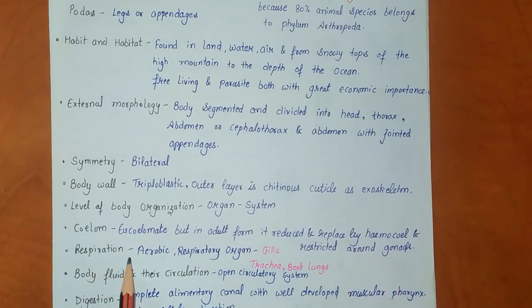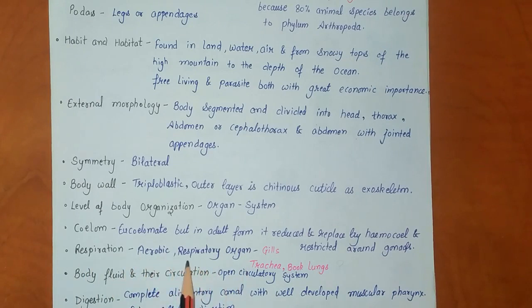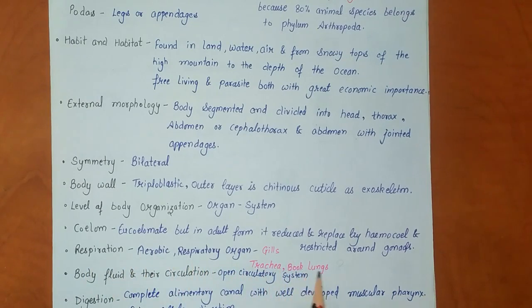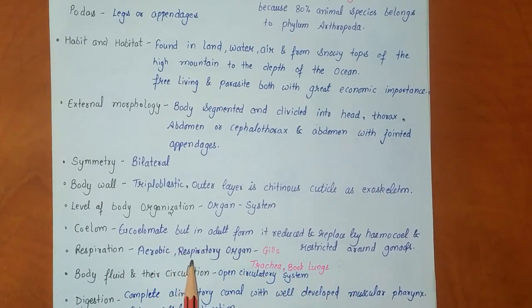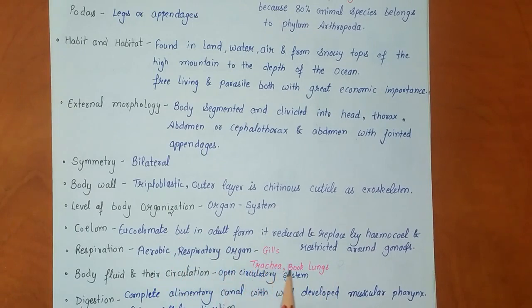Respiration is aerobic. Their respiratory organs are gills, trachea, and book lungs. This is an important point frequently asked in competitive exams — the respiratory organs present in arthropods are gills, trachea, and book lungs.